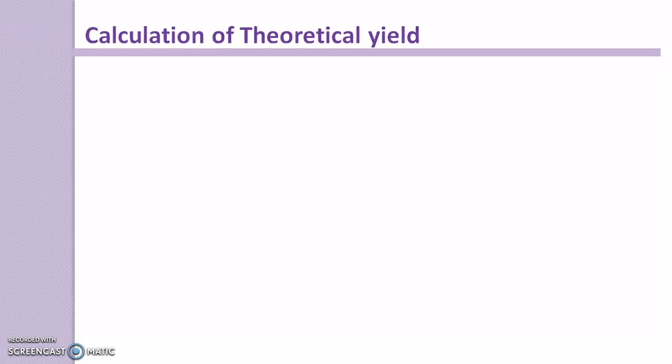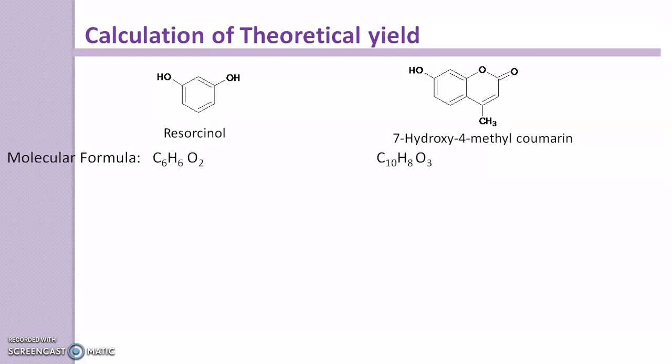Now the next part is the calculation of theoretical yield. You have to first of all draw the structure of your starting material which is resorcinol and the product 7-Hydroxy-4-Methyl-Coumarin. Write down its molecular formula and calculate the molecular weight.